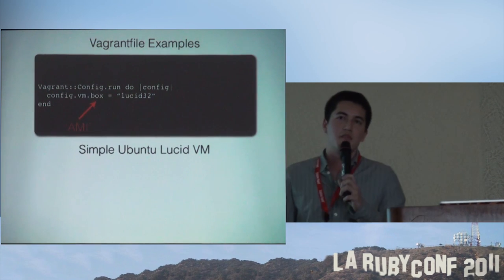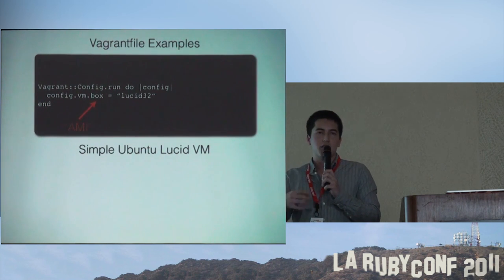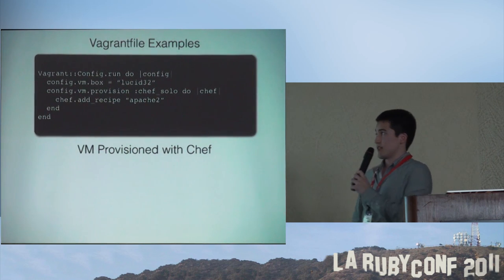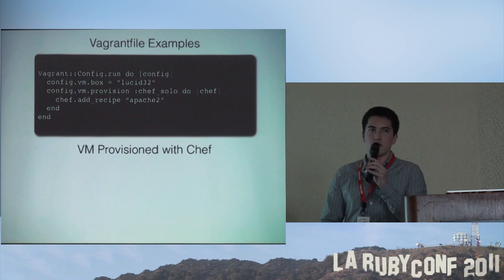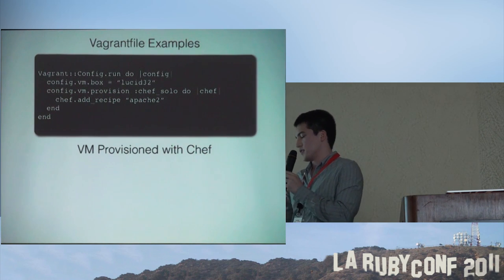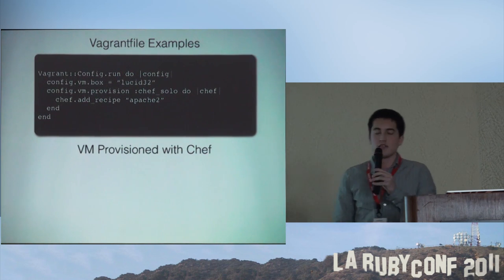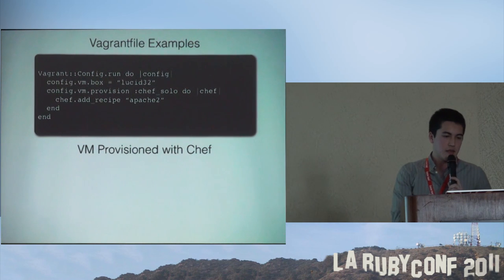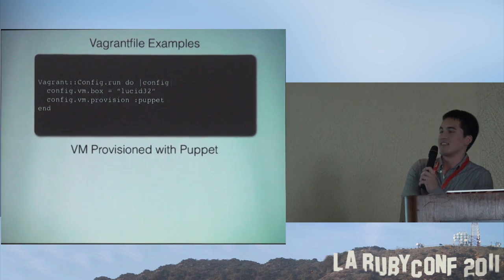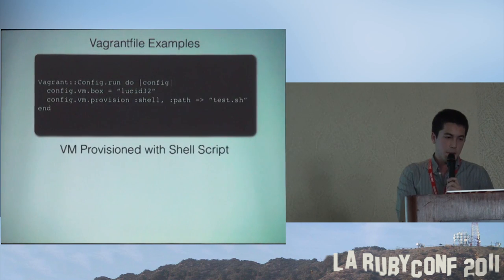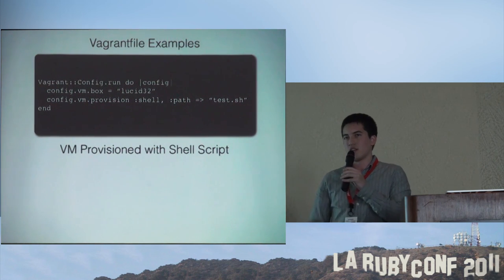Here's a slightly more complicated example where your VM is provisioned with Chef. If your system has Chef scripts, you could actually use them to provision your VM. In this case we're just using Chef Solo and telling it to use the Apache 2 recipe. If you're a Puppet user, it's just as simple. You could also use a shell script if you don't know Puppet or Chef - just pull your README out into a shell script and you could do it that way too.